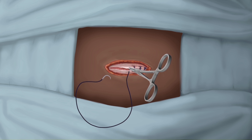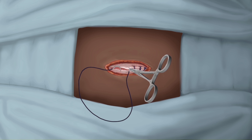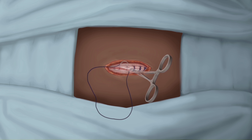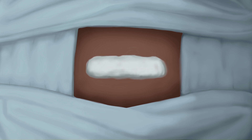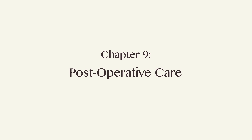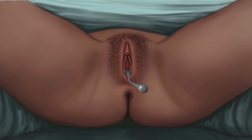Ensure hemostasis before closing the fascia. Suture the fascia properly with running or interrupted sutures to prevent herniation. Close the skin with absorbable sutures and dress the wound. Remove the uterine elevator and check for vaginal bleeding.